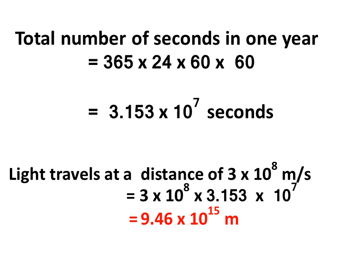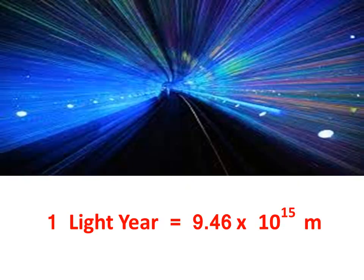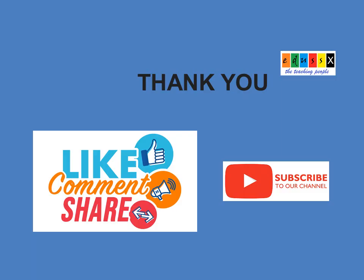This will give you a value of 9.46 × 10^15 meters. This is known as the light year. Therefore, one light year is defined as the distance traveled by light in vacuum during a period of one year. We shall meet in the next class. Thank you.